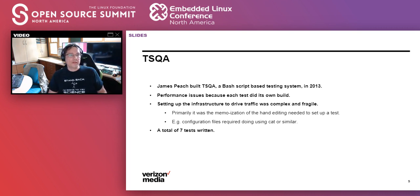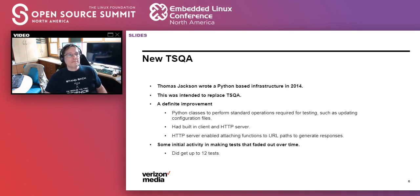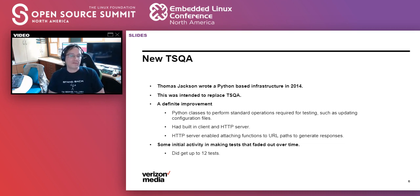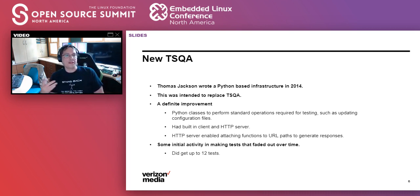This was not really very successful — a good attempt, but in the end I went back and checked the source log and we ended up with seven different tests, which is not a roaring success. After about a year, another developer named Thomas Jackson came in and tried to learn from this experience. He wrote a Python-based infrastructure — one, because he was good at Python, and two, because it's a common language. This was intended to replace the TSQA stuff.